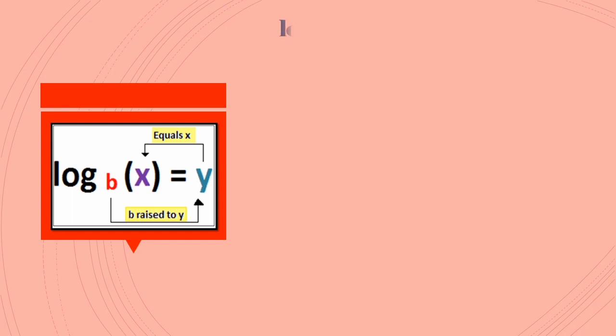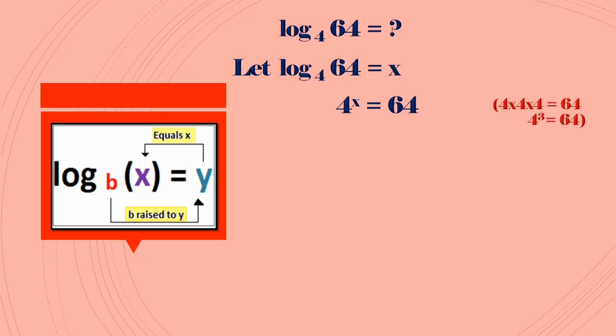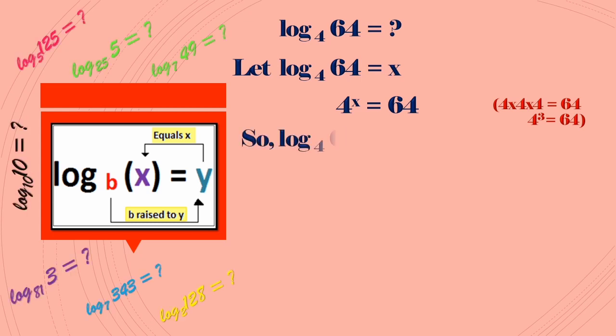Take another example: what is log₄64? Let us say log₄64 is equal to x. Another way of rewriting this equation is 4^x = 64. Here, how many times you need to multiply 4 with itself to get 64? 4 × 4 = 16, 16 × 4 = 64, so clearly it is 3 times. 4^3 = 64, so log₄64 = 3.